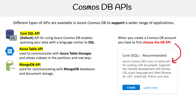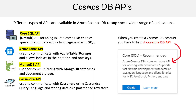Then you have MongoDB API. It's not actually MongoDB underneath, but it is compatible with MongoDB, so if you need MongoDB, this is where you'd spin that up. Same thing with Cassandra — if you need Cassandra, you can spin that up as well, and it uses the Cassandra query language.